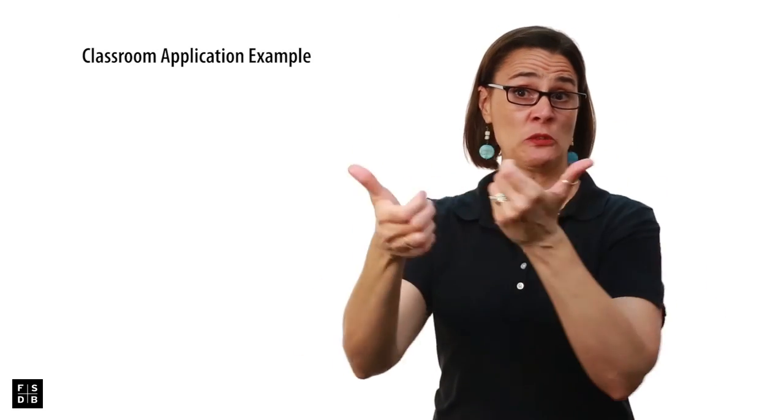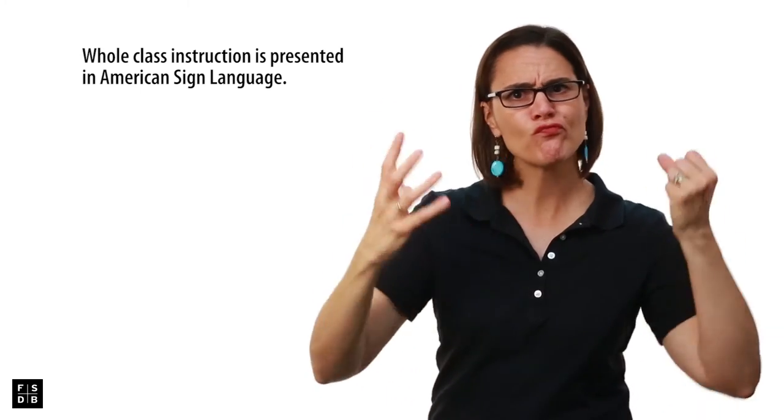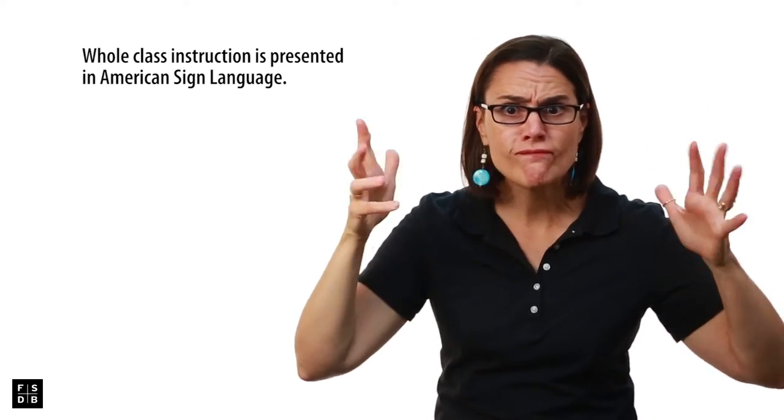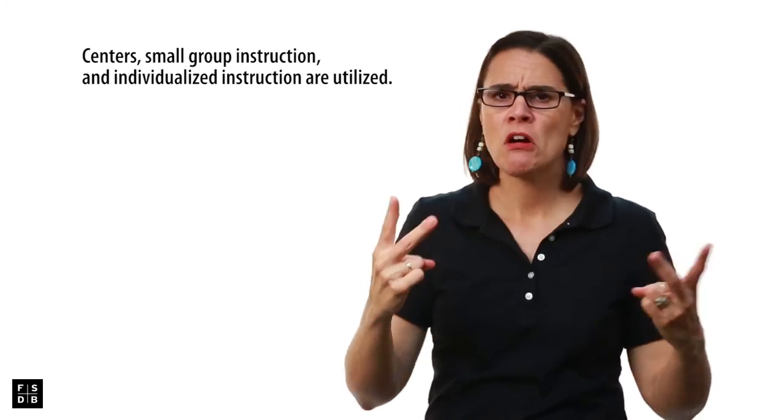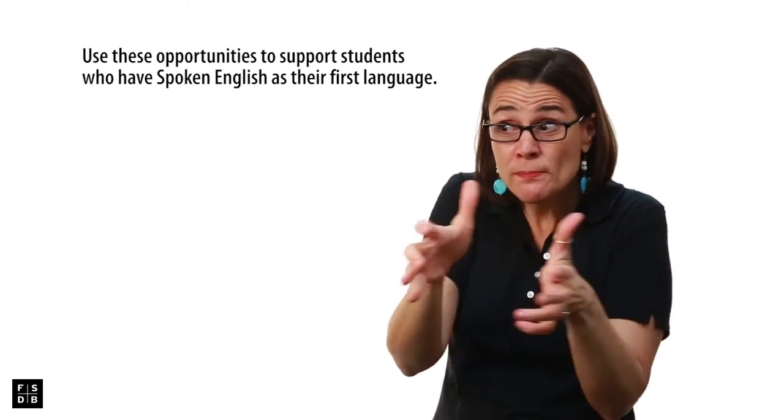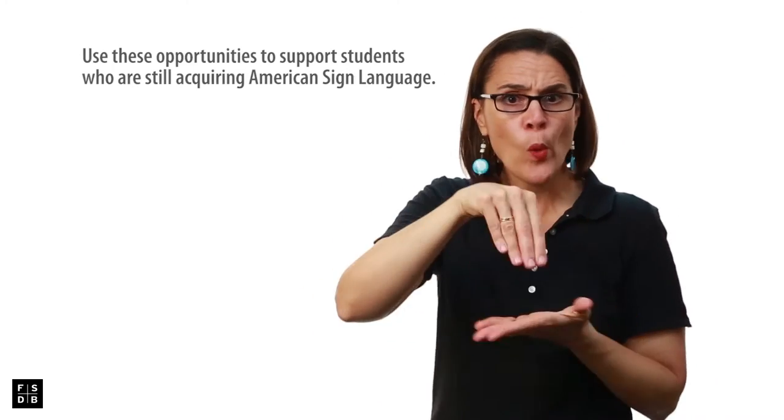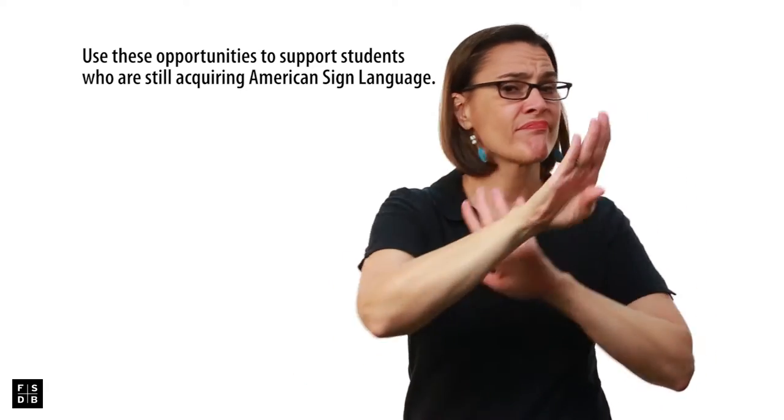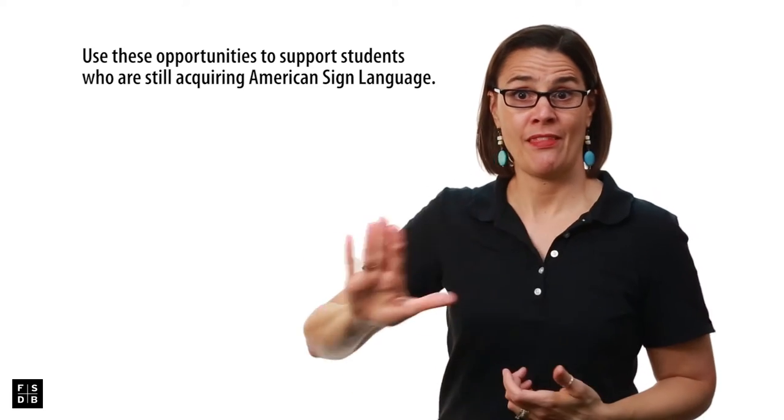Here would be a classroom application. Remember that all of the classes all day will not look the same. We are going to strive to meet the needs of every student. For example, in a class, you may first have the teacher using whole group instruction and using ASL to teach. After that, they may go into small groups, work one-on-one, or work in pairs. During that small group time, the teacher may take the opportunity to work with students who are using spoken English, to work with students who are acquiring ASL, or to work with those students who have excelled in using American Sign Language but are needing help with their reading and writing of English. It is important that they are meeting the needs of the students.